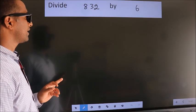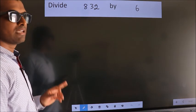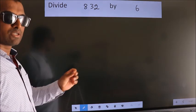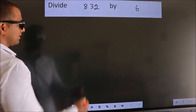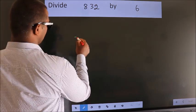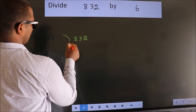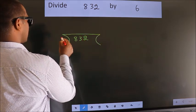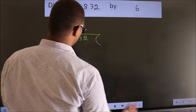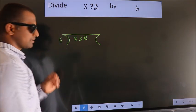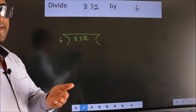Divide 832 by 6. To do this division, we should frame it in this way: 832 here, 6 here. This is your step 1.